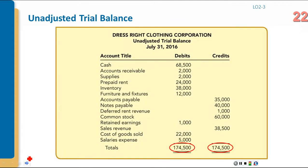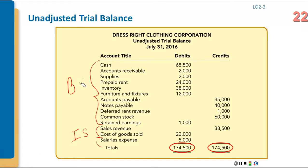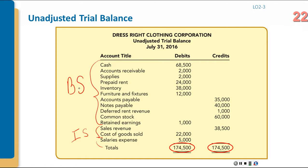The unadjusted trial balance lists all accounts — both balance sheet accounts and income statement accounts — in one place. Once you confirm you are in balance, you are ready to prepare adjusting entries. There are three basic kinds: prepayments, accruals, and estimates, each with multiple possible entries underneath. Under prepayments, you may have prepaid expenses where a company pays in advance for rent or insurance, and at period end some of that prepaid has expired and must be recognized as expense.